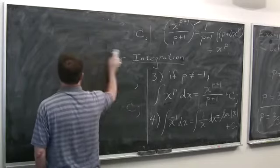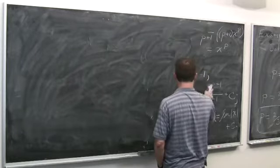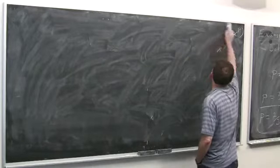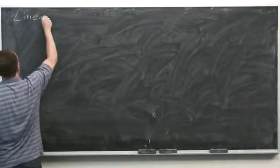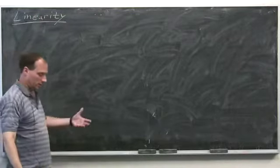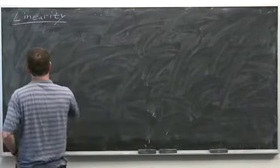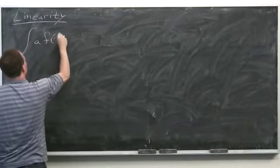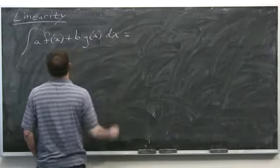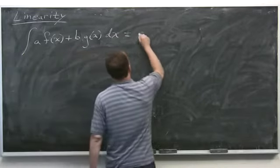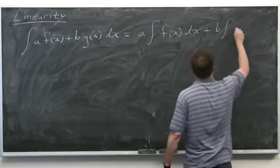What other rules do we get? A very important one is linearity. Since differentiating is linear — if you take the derivative of a sum of constants times functions, you just take the derivative of each function, multiply by the constants, and add — anti-differentiation works the same way.